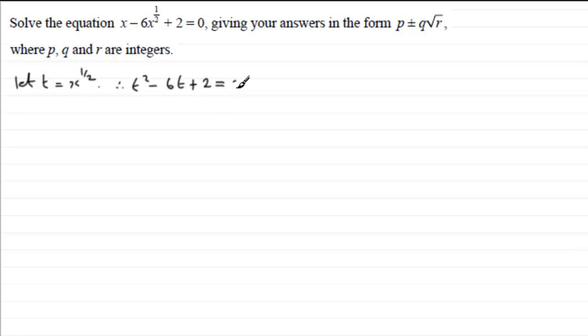So what we would have is therefore t squared minus 6t plus 2 equals 0. So we've got a quadratic equation in t or x to the power half. In order to solve this we would either want to factorize it, but when I look at the answers here it seems to suggest we're going to be using the formula, we're not going to get an exact answer.